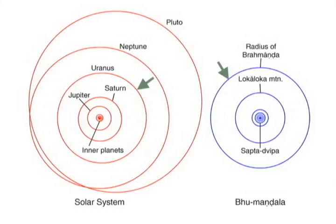Within Bhumandala, a ring-shaped mountain called Loka Loka is defined by the Bhagavatam as the outer limit of the luminaries. Perhaps coincidentally, this ring is about the size of the orbit of Saturn, the outermost of the planets visible to the naked eye.